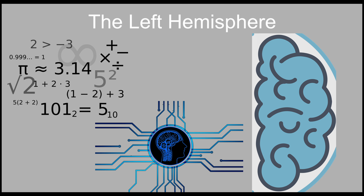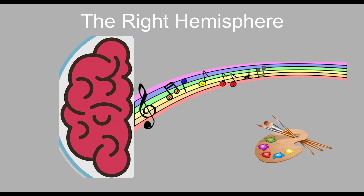Back to the right and left hemisphere. The left brain is in charge of reason and logic, and is also responsible for the right side of our body — yes, the opposite side. The right side of our brain is responsible for music, art, and the left side of our body.